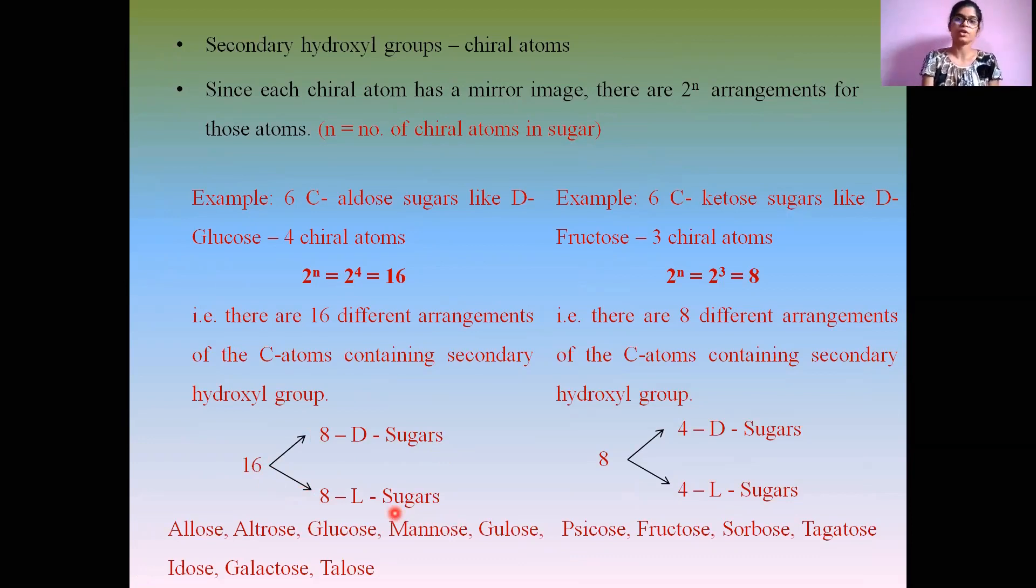If you have seen our previous introductory video, I discussed the Rosanoff structure of the D-aldosis sugars. If you have not watched that video, I will drop the video link in the description box. In that, you can see that hexoses are 8 sugars: allose, altrose, glucose, mannose, gulose, idose, galactose, and talose. These 8 sugars exhibit 2 different forms, so 8 times 2 gives 16 different forms of sugars. The 2 different forms are the D and L forms.